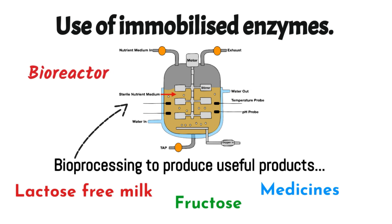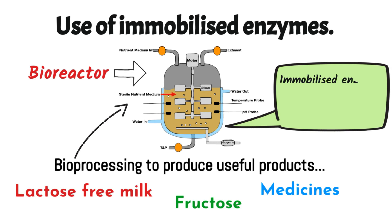In industry, bioprocessing takes place in a vessel known as a bioreactor. The immobilised enzyme and substrate are added, and conditions are maintained to ensure pH and temperature are optimal for that enzyme.